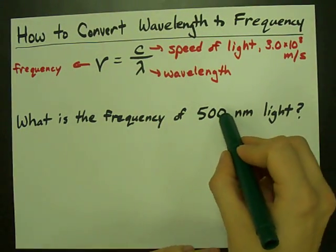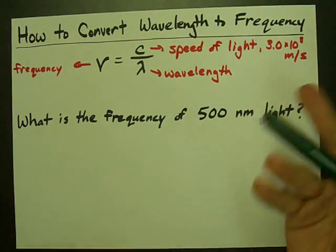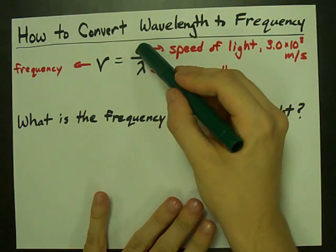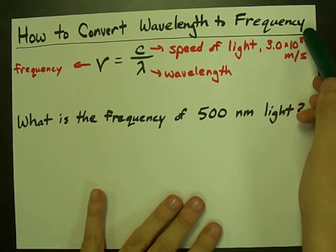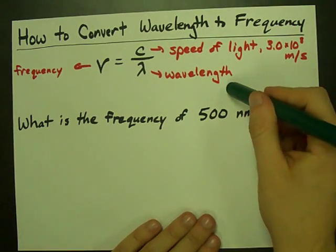If you're given a wavelength of light, how do you convert it into what we call the frequency of that light? Long story short, take the speed of light, which we call 3.0 times 10 to the power of 8 meters per second, and just divide it by the wavelength.